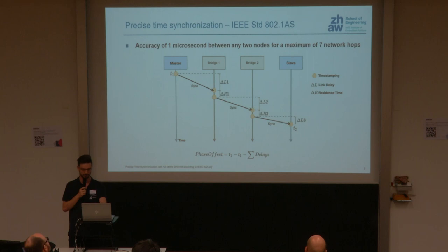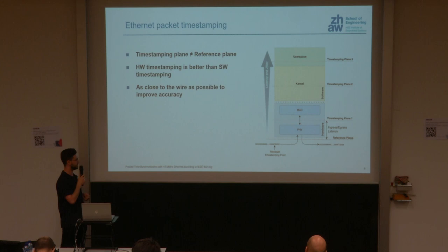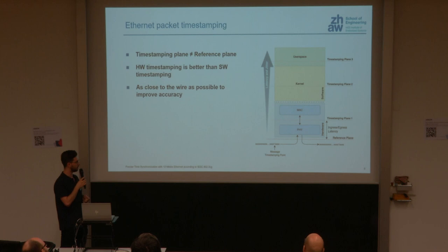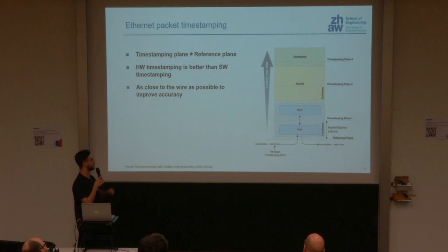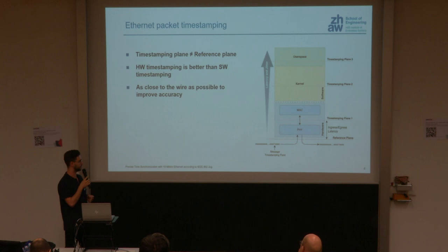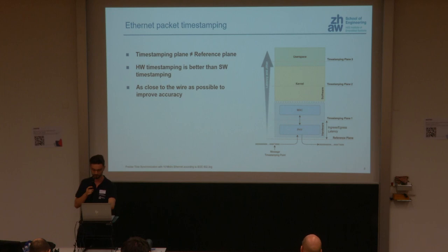There is a lot of timestamping going on, and this is a key point. Timestamping means saving the time when an event — sending or receiving a message — happens. The standard defines the reference plane as the border between the wire and the device, but you have to timestamp higher up the stack. The higher you go, the higher the latency and jitter, increasing timestamp error. You should timestamp as close to the wire as possible — ideally inside the PHY — but PHYs with timestamping for 10BASE-T1L are not yet available with a standard MAC-PHY interface. The second best option is the MAC-PHY interface, which is precisely what we did.